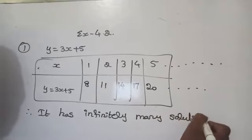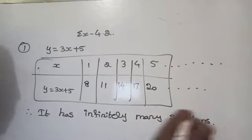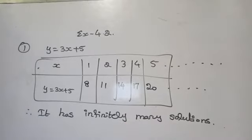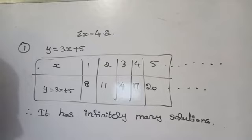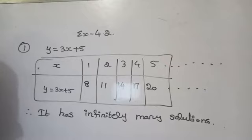To summarize: a linear equation in two variables has infinitely many solutions, while a linear equation in one variable has a unique solution. The standard form of a linear equation in one variable is ax plus b equal to 0, where a is not equal to 0 and a and b are any real numbers.